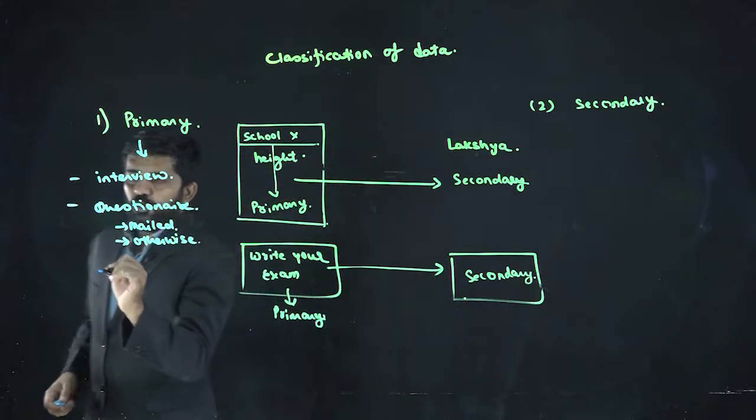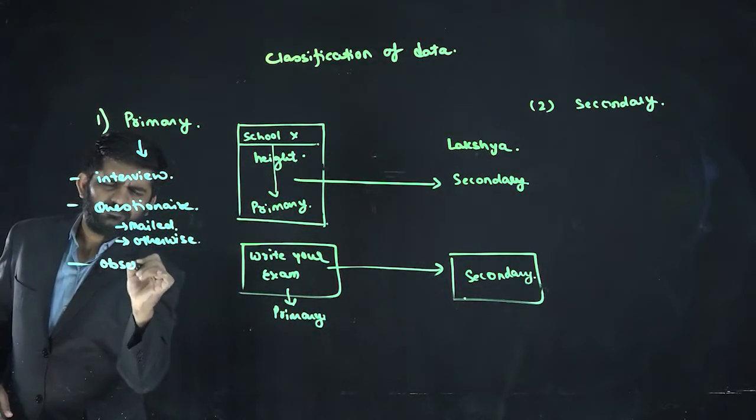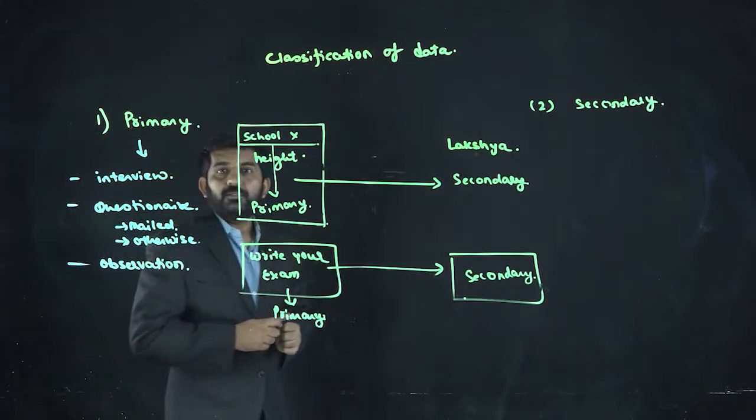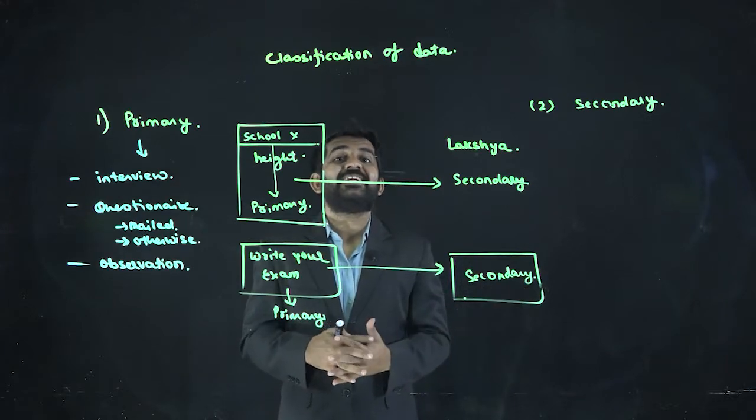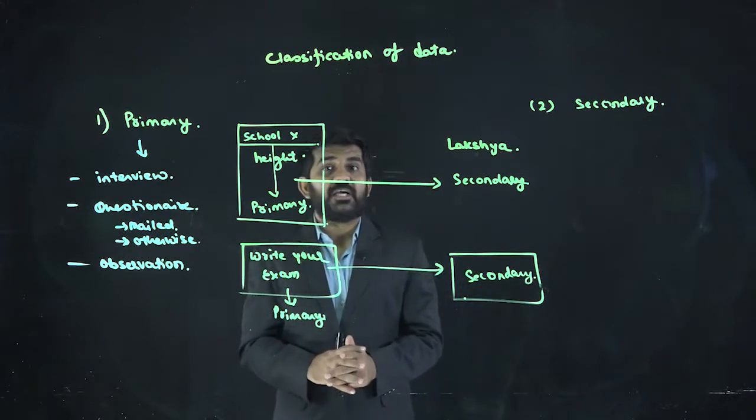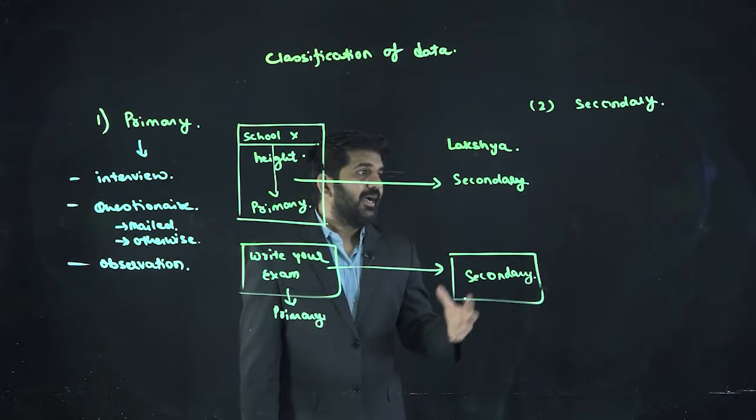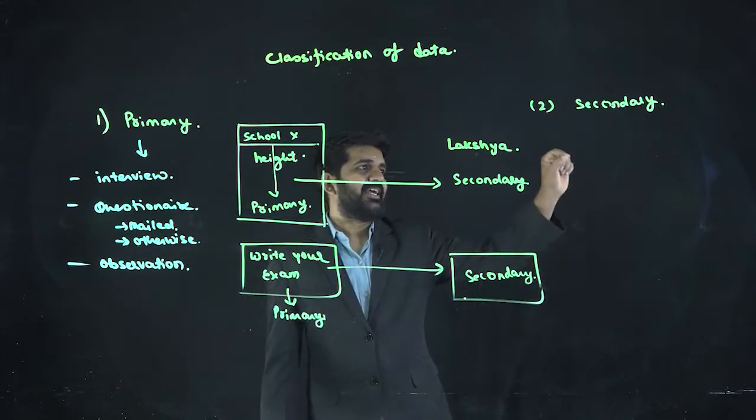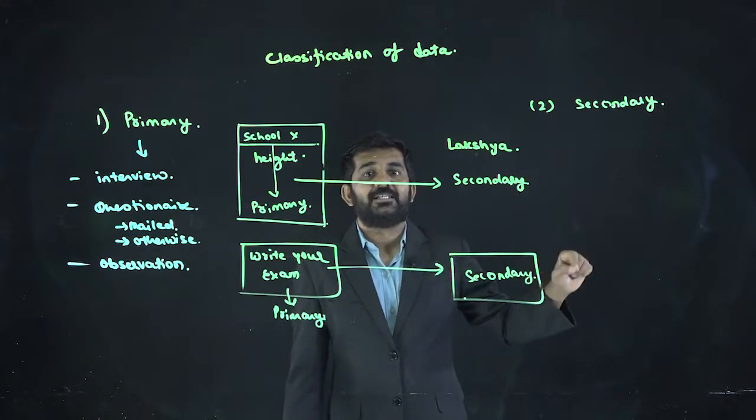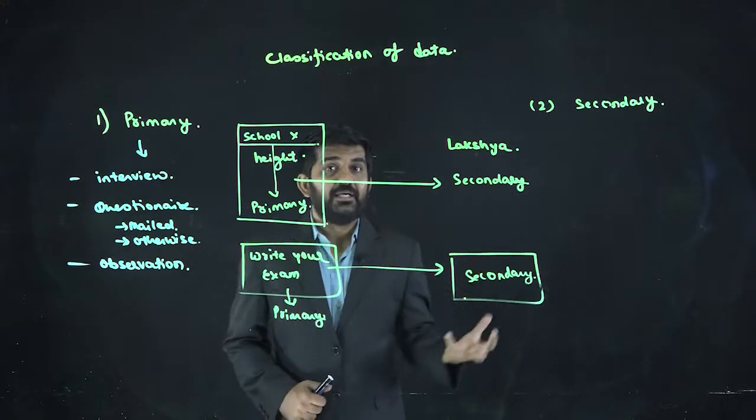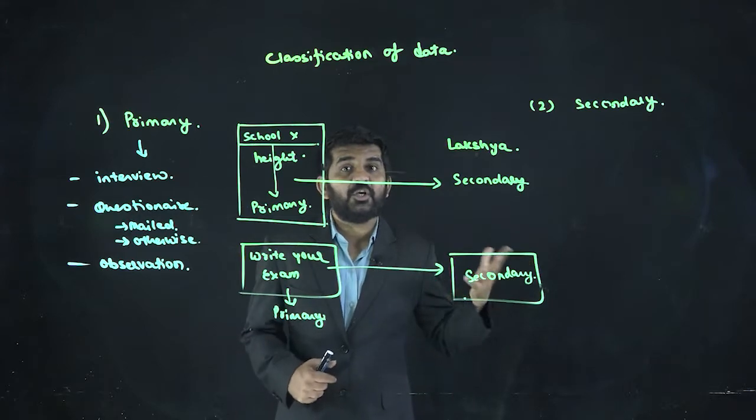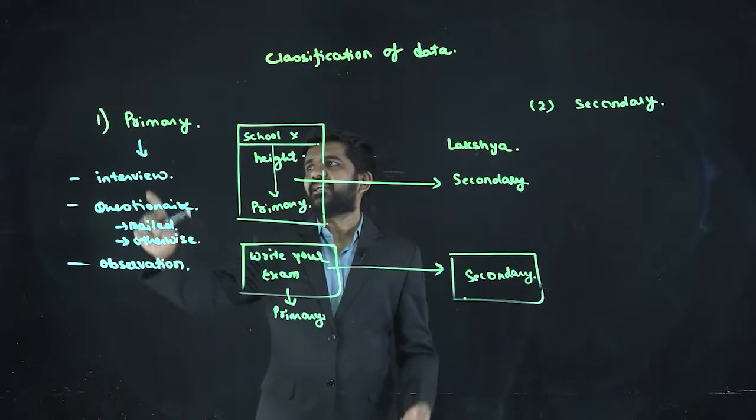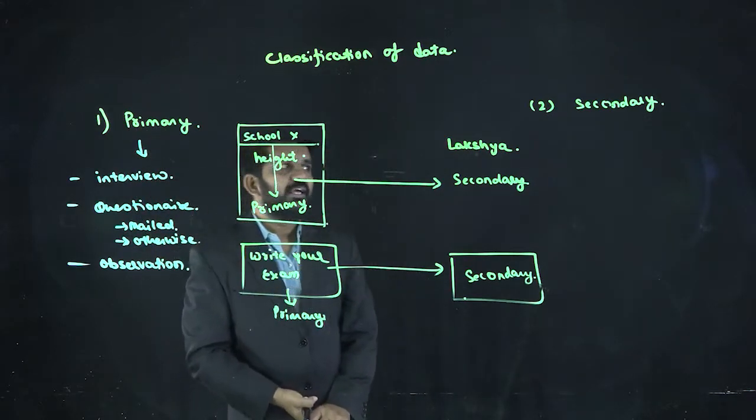And last is observation. Smartness of people, qualitative attributes, which I am converting into data. I see how the students are performing in the classroom. Ultimately, decide this is 10 intelligence, this is 9 intelligence, this is 8 intelligence. Questionnaire? By interview? No. By just observation. By observation also, I can collect which type of data? Primary data.